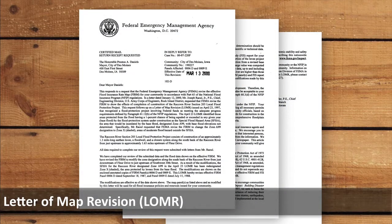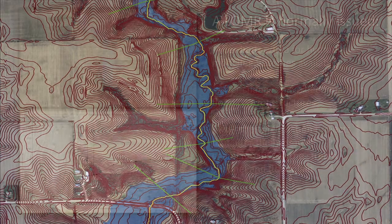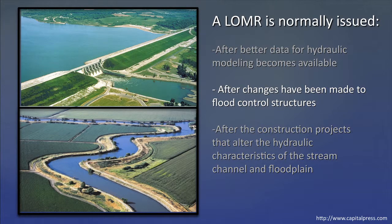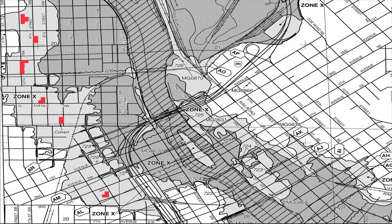The last letter of map change we will discuss, the Letter of Map Revision, or LOMR, is less commonly used than the other two because it reflects changes to an effective FIRM that are based on revised hydraulic modeling or other analyses. A LOMR is normally issued after better data for hydraulic modeling becomes available, after changes have been made to flood control structures such as dams and levees, or after construction projects that alter the hydraulic characteristics of the stream channel and floodplain such as bridges, culverts, and channel realignment. A LOMR usually will not be focused on specific properties or structures.